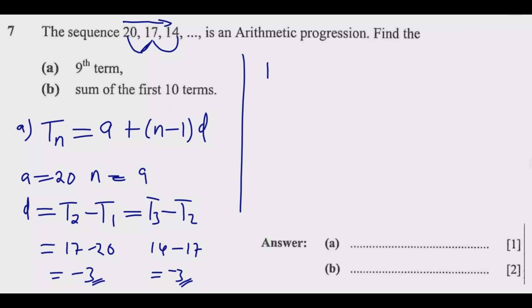Once we do this, now it's just a matter of substituting. So it will be T9 equals 20 plus (9 minus 1) times negative 3. So I'm going to have 20 plus 8 times negative 3, which will be 20 minus 24. This is going to give me negative 4. So negative 4 is the answer. Once you do this you're good to go, get that one mark.